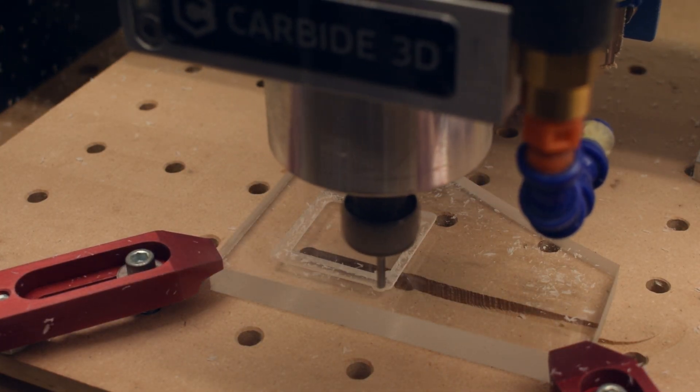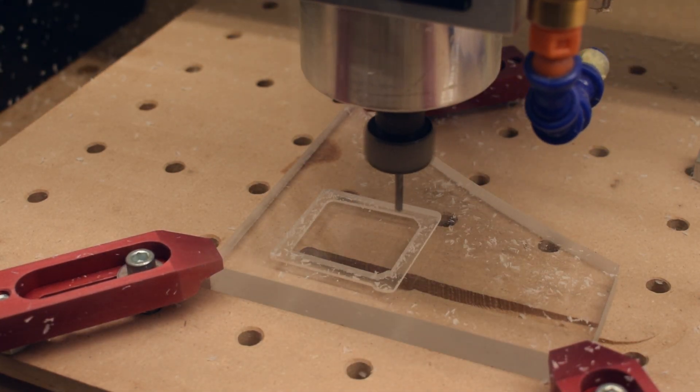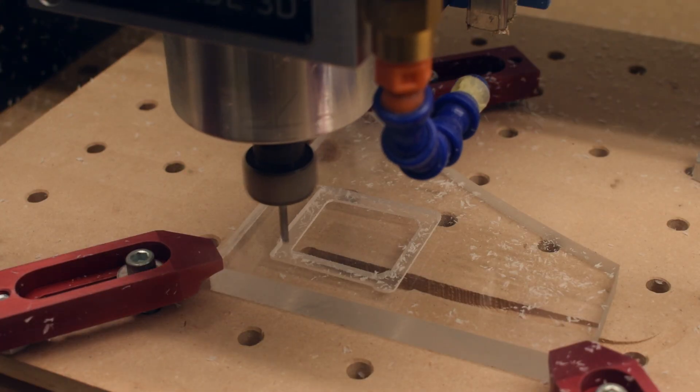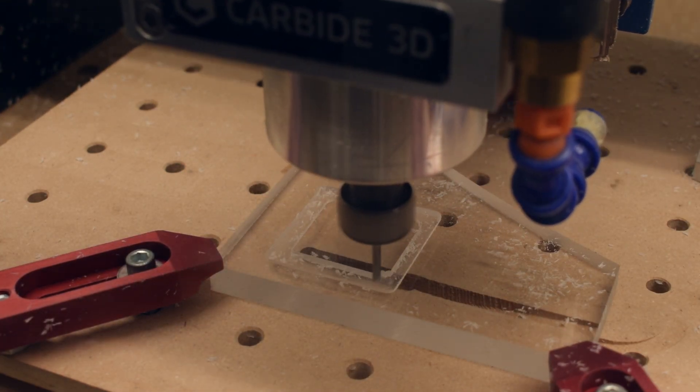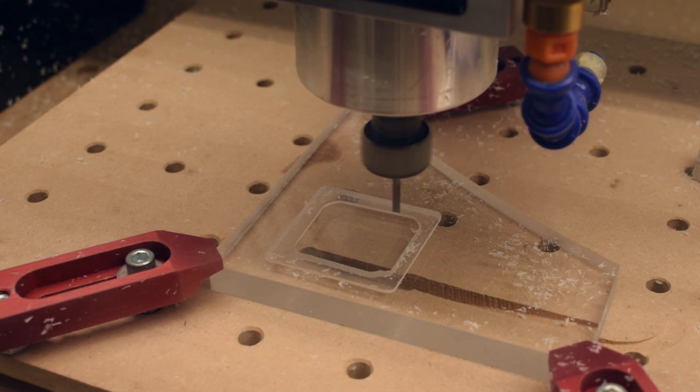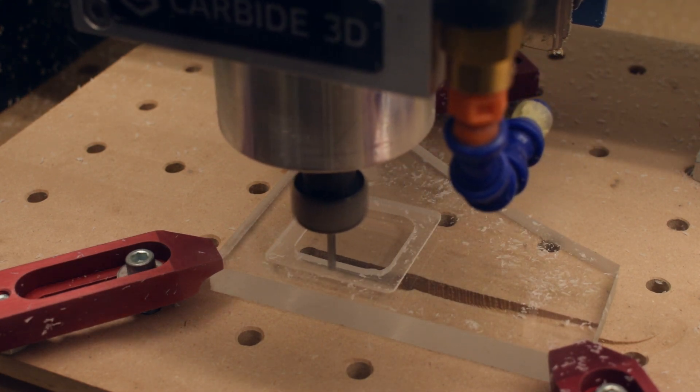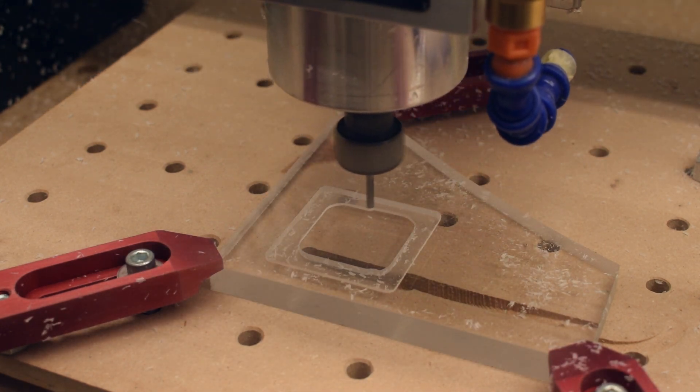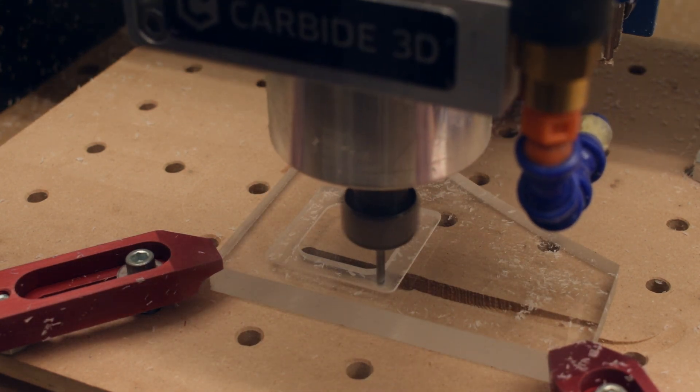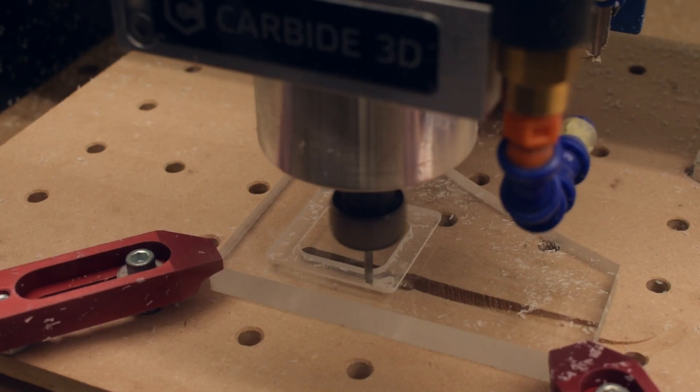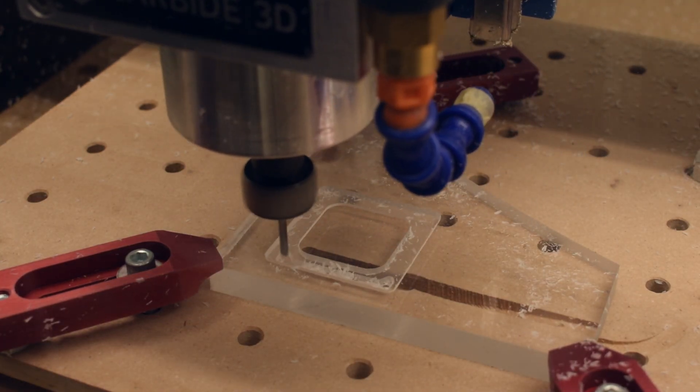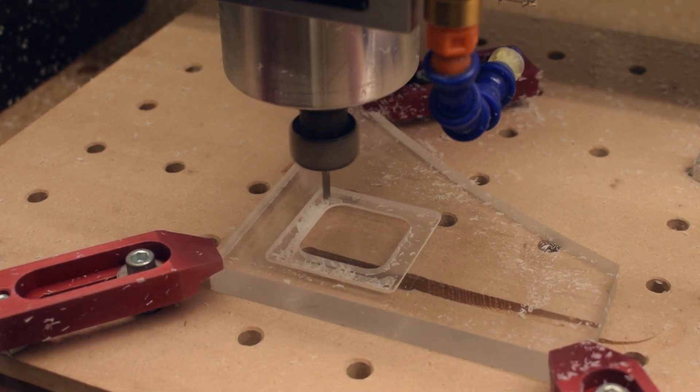We can stab an eighth-inch end mill into acrylic really easily, but pressing a quarter-inch end mill into acrylic too fast can cause you to lose steps on the Z axis. The HDZ can handle a lot more force, but I'm scaling this recipe back for our stock Shapeoko 3 users. For larger tools, I would recommend a plunge feed rate of no more than 10 to 12 inches per minute. That works out to 1 thou per revolution of the cutter.